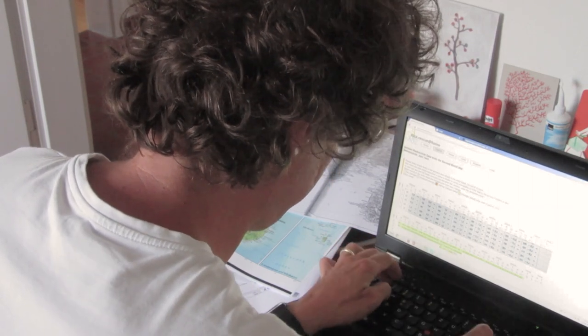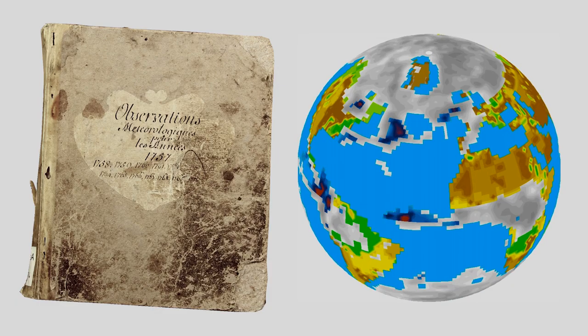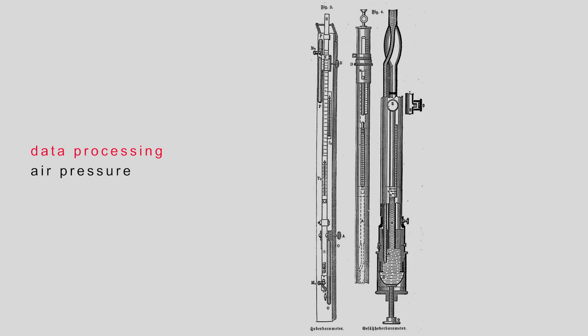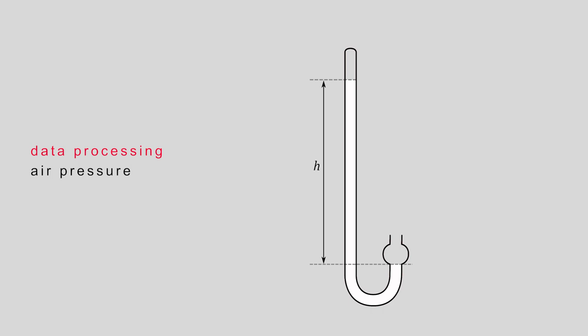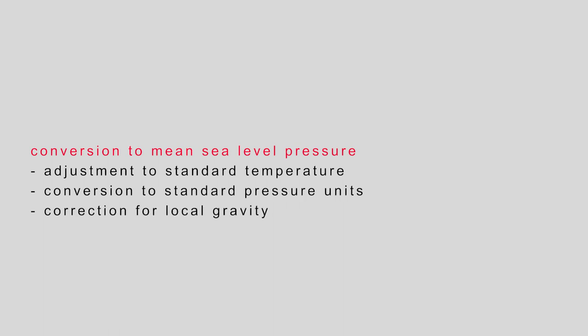The next step is to digitise the data, which requires carefully typing the handwritten measurements into computer tables. However, it is still a long way from these raw instrument readings to climate reconstructions. First, the measurements need to be processed. Let's take air pressure as an example, which was mostly measured with mercury barometers. What is measured is the length of the mercury column. For scientific applications, this length needs to be converted into mean sea level pressure. This conversion requires four steps: adjustment to a standard temperature, conversion to pressure units, correction for local gravity, and reduction to mean sea level.